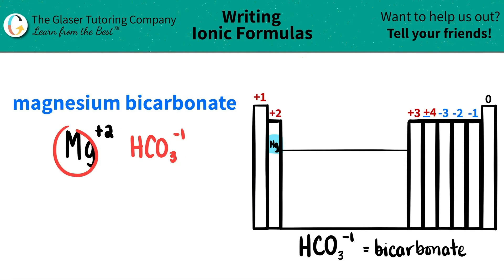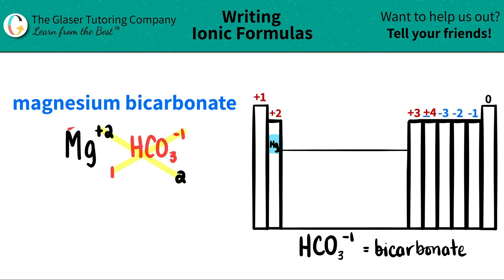Now, since we have both components and both charges, we do this cool little trick where we crisscross the charges to say how many of each I need in my formula. So this plus 2 will crisscross down, telling me that I need two of the bicarbonates. And then this negative one will crisscross down, telling me that I just need one of the magnesium. When we do that, the charges kind of vanish and we just use these numbers at the bottom.